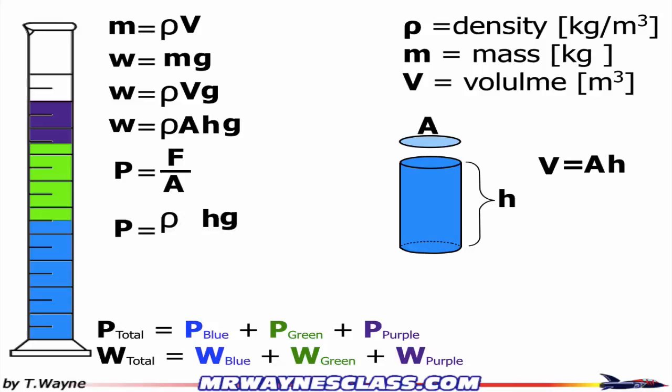So now, this is going to leave me with rho gh. The pressure at the bottom due to the fluid is equal to rho gh. So that means that the pressure at the bottom of the blue cylinder of fluid is equal to the density of the blue, g, times the height of the blue.